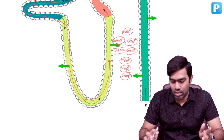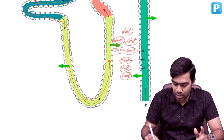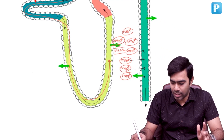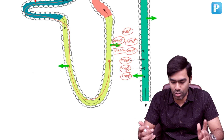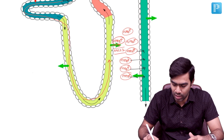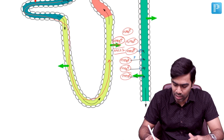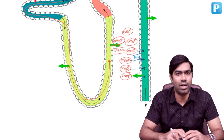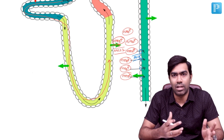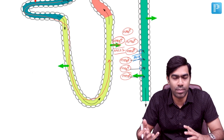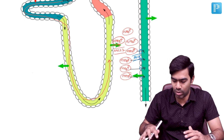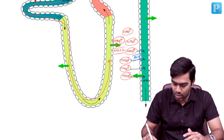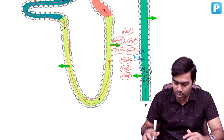Distal tubular cells can take up ammonium from the medullary interstitium as needed. Both the uptake of ammonium on the basolateral side and its secretion into the urinary lumen on the apical side are mediated by the important transporter RHCG. Once ammonium is in the urine, it is eliminated as ammonium chloride.